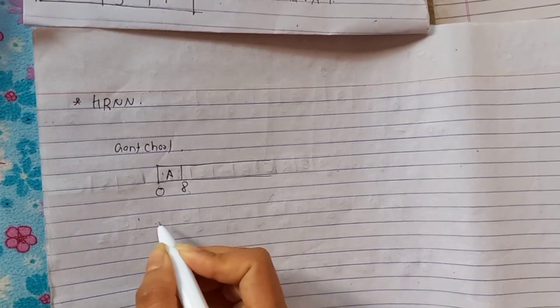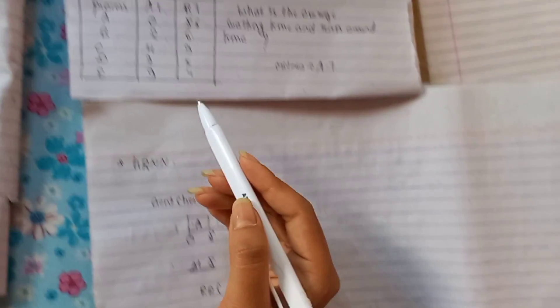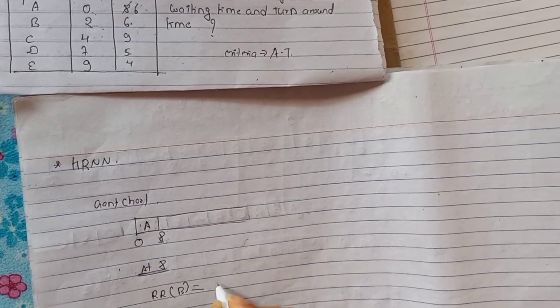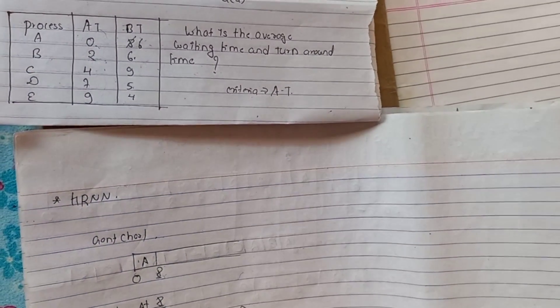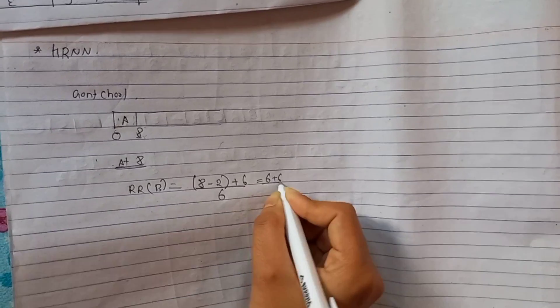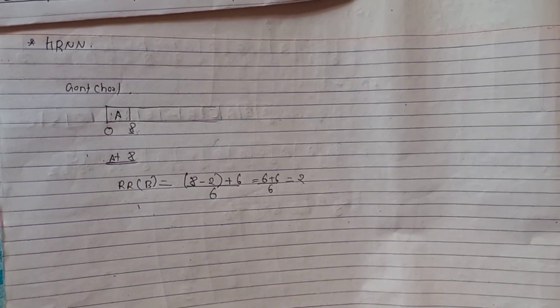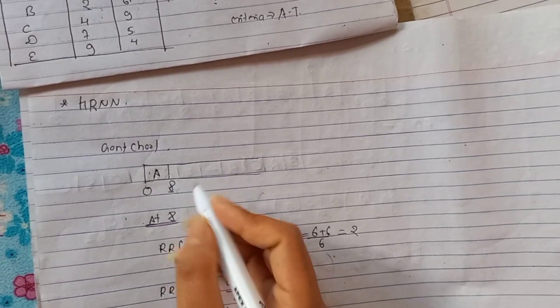We calculate the response ratio for each process. The response ratio formula is applied. The response ratio of B is calculated, then of C and D. The response ratio is compared to find which process goes next.